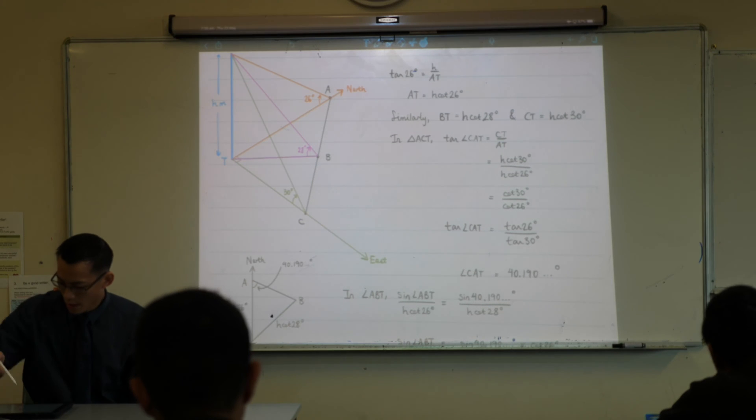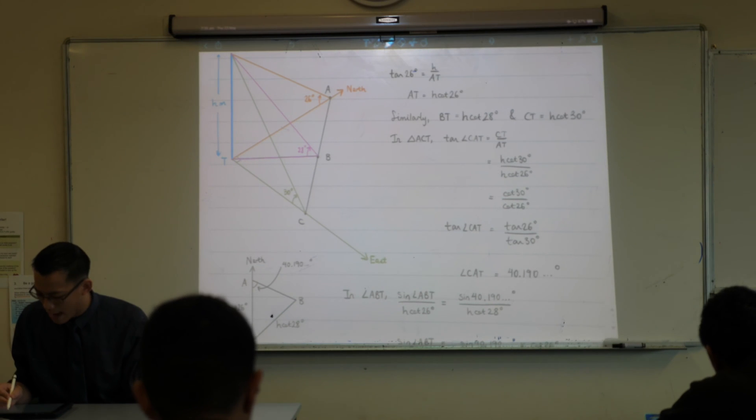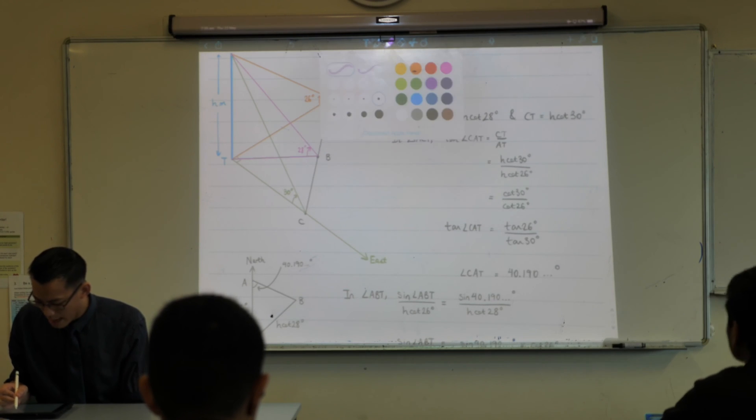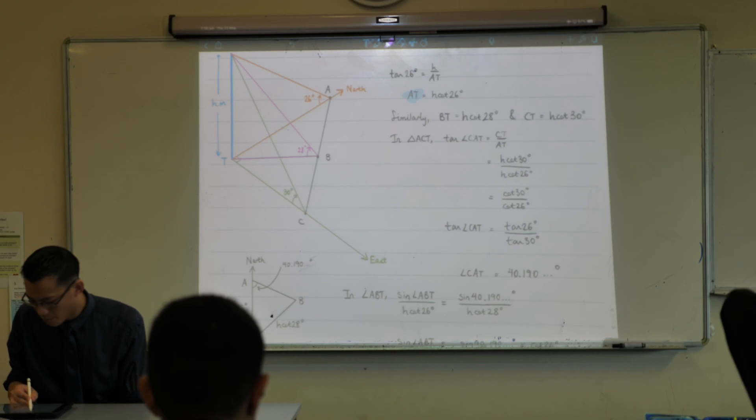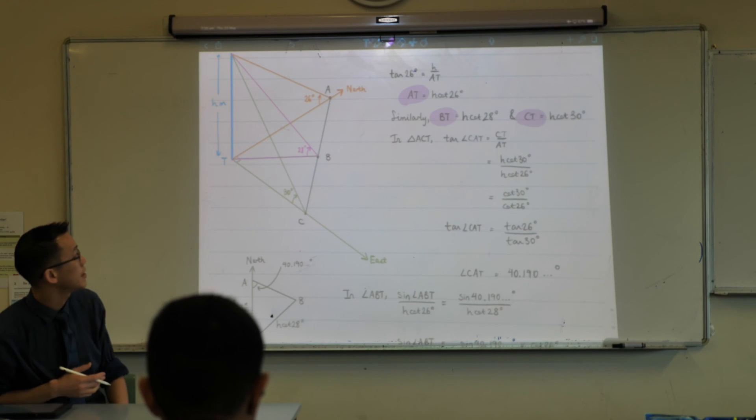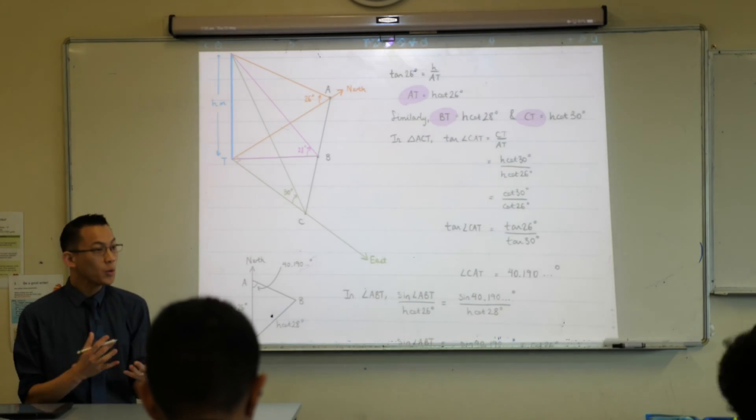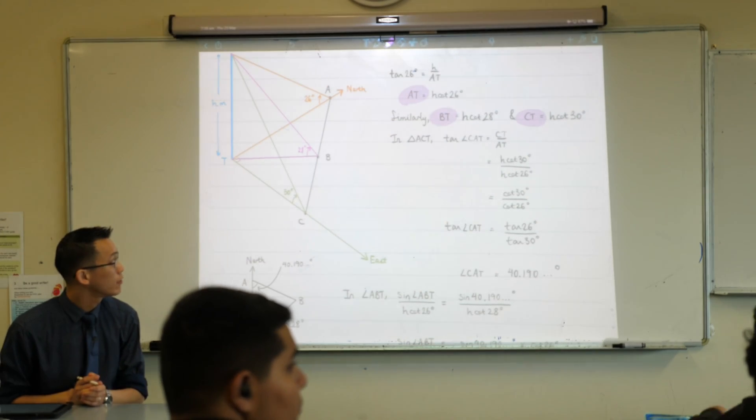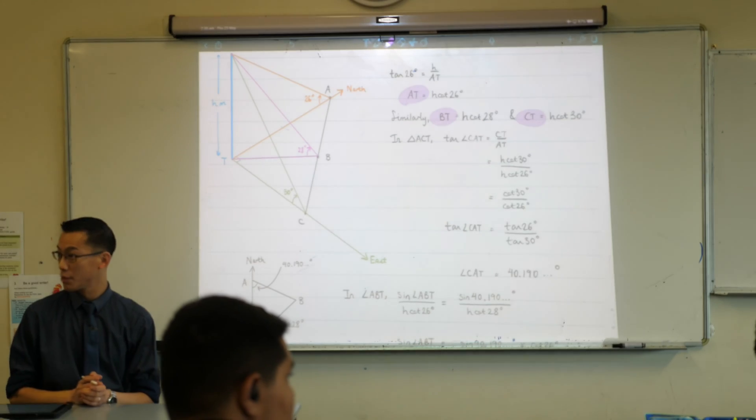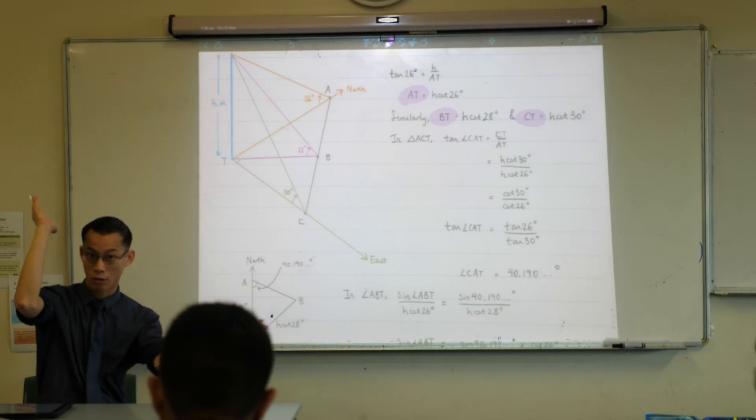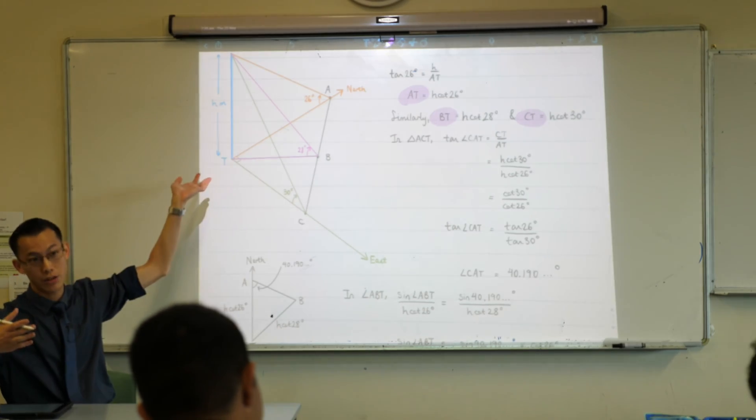You can see we worked out AT, BT, and CT. These are the lengths on the ground. Can you guys see that? We got all the lengths on the ground using right-angle triangle trig, because the tower is vertical, so it always creates a right angle with the ground.